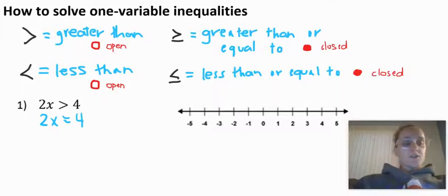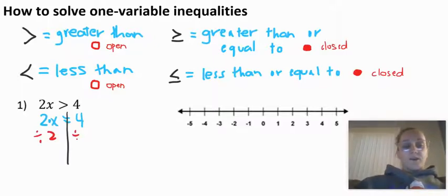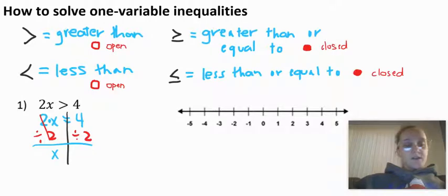Remember, we're always thinking about what's the opposite operation. So if I have 2 times x on the left side here, what's going to be the opposite of multiplying by 2? Well, that's going to be dividing by 2. So I divide by 2 and divide by 2. So 2 divided by 2 is 1, so I'm just left with x on this side and then 4 divided by 2 is 2.